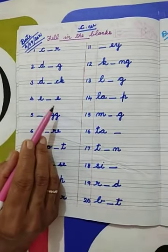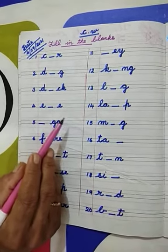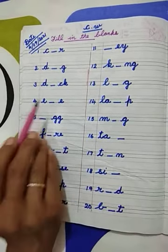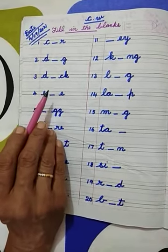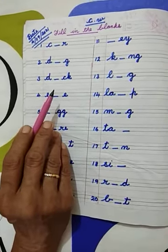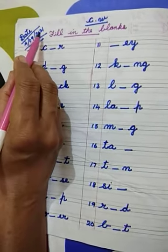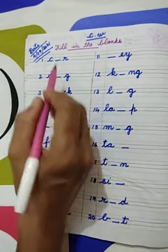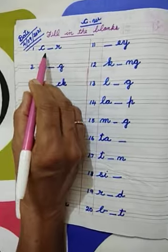What we have to do is, we have to write the missing letter in each weight given here. Then let us start. 4 September 2021. Filling the Blanks. We will complete the missing letter in each weight.